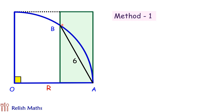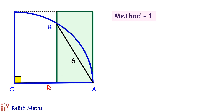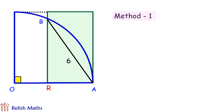Let's expand this rectangle a bit. We have expanded the rectangle, changing the quadrant size such that AB still remains the same 6 cm. The question language is not changing, and thus the area of the rectangle for this figure should also come out the same.